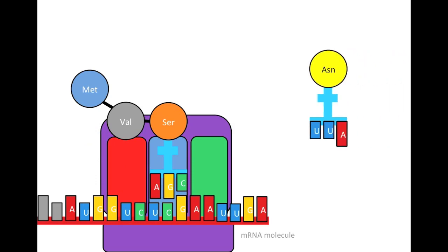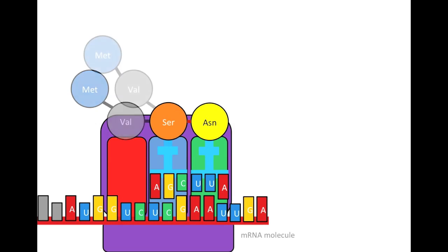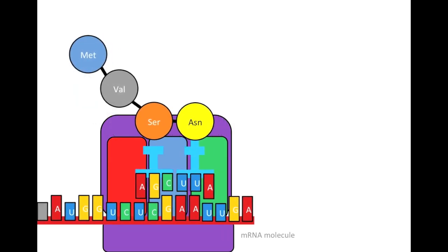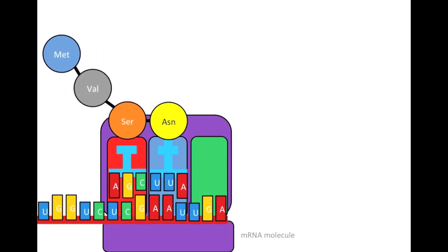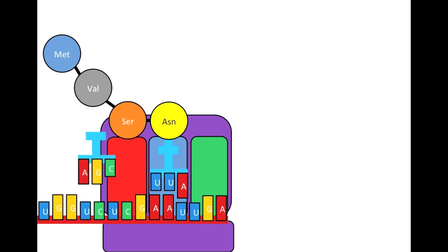Again, a new tRNA molecule will enter with the appropriate anticodon and amino acid. Again, a peptide bond will form, and the growing polypeptide chain transferred. The mRNA shifts, and the tRNA exits from the E site. As you can see, we have a growing polypeptide chain attached to the tRNA in the P site.